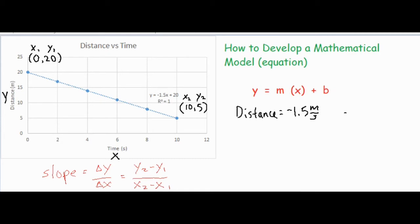Anytime you develop a unit for a slope it's always going to be something over something. So it's always your y units divided by your x units. Okay, so now we've got our y variable and our slope.